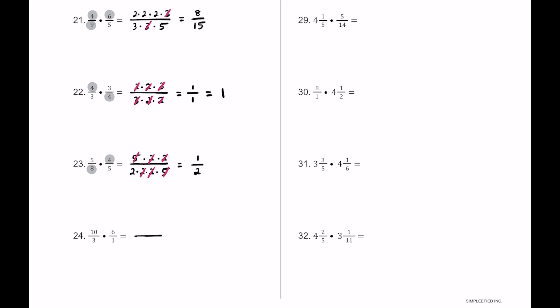For number 24, the composite numbers are 10 and 6. 10 breaks into 2 times 5, and 6 breaks into 2 times 3. On the bottom we have 3 times 1. The 3s cancel out — that's the only pair. On top, 2 times 5 times 2 equals 20, and on bottom we're left with just 1. The answer is 20 over 1, which is just the whole number 20.